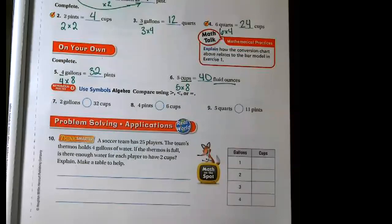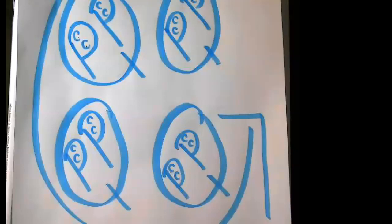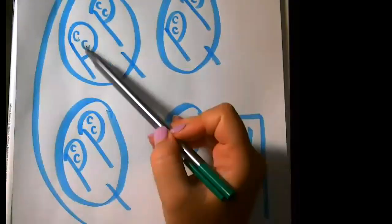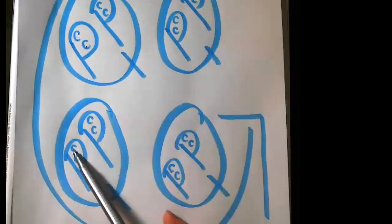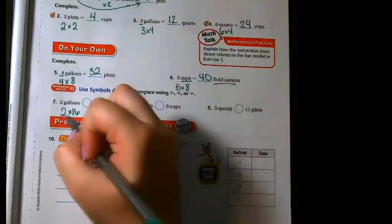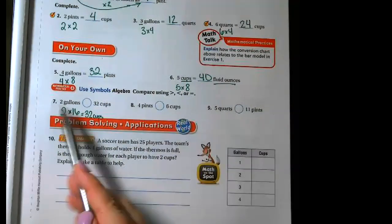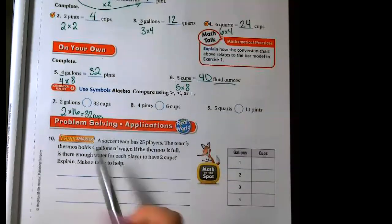In our next section, we're going to be comparing. Just like we've done in the past, you want to change your larger unit into your smaller unit. For our first one, we have gallons and cups. I need to look at my single gallon picture and ask how many cups are in one gallon — counting all the C's, I get 16. So I do two times 16, which equals 32 cups. I have 32 cups on this side and 32 cups on this side, which makes these equal.